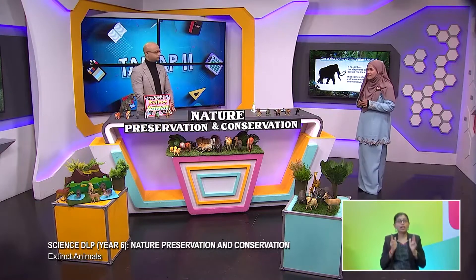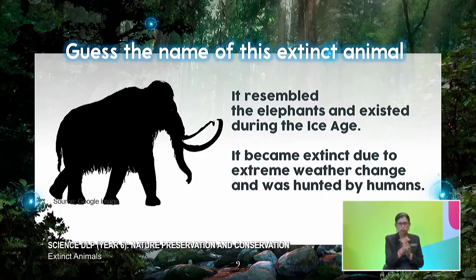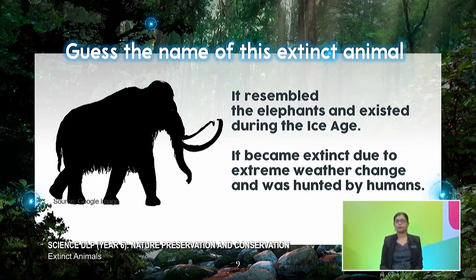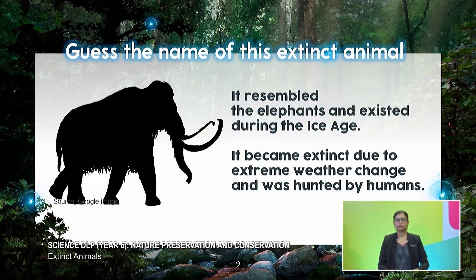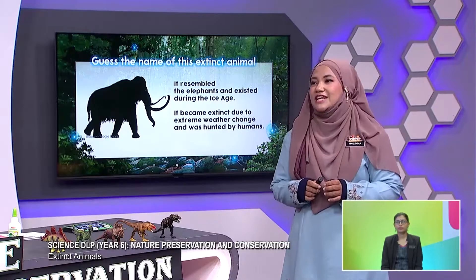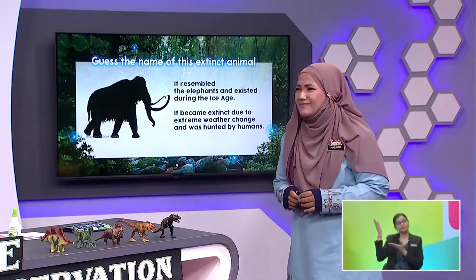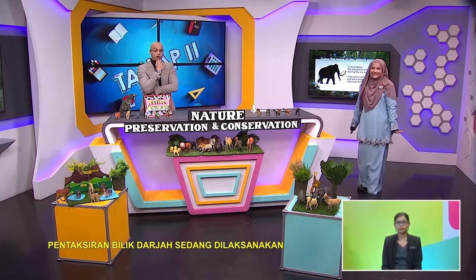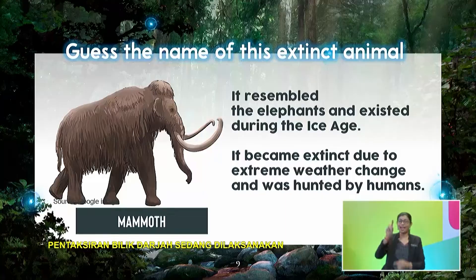If you look closely, it looks like an elephant, but its tusks are really long and curvier. And look at the body — the backbone is not straight like an elephant's. And one more thing: look at its hair, it's very furry and a bit long. So what is the name of this extinct animal, Abang Sean? I think my friends watching right now can also make a guess, since it resembles an elephant. I guess this is a mammoth. Yay, you are absolutely right!